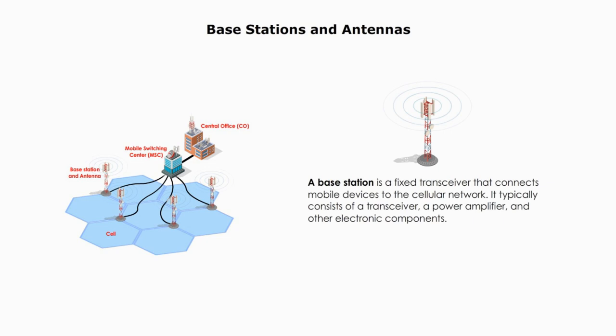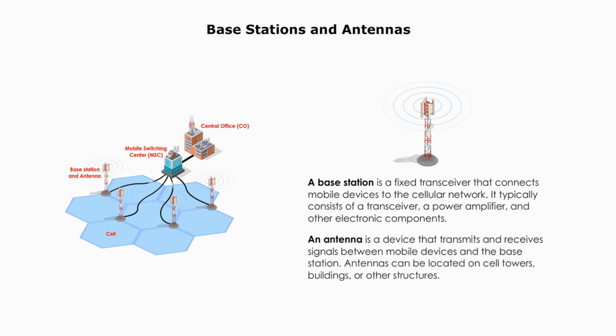An antenna is a device that transmits and receives signals between the mobile devices and base station. Antennas can be located on cell towers, buildings, and other structures.